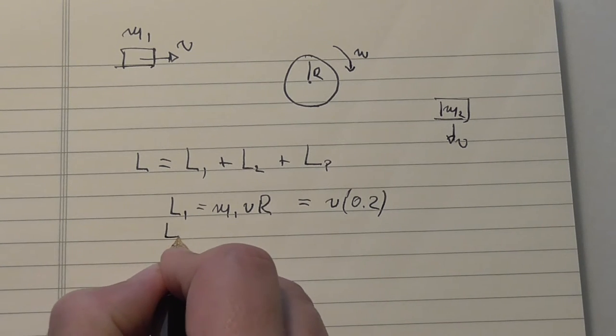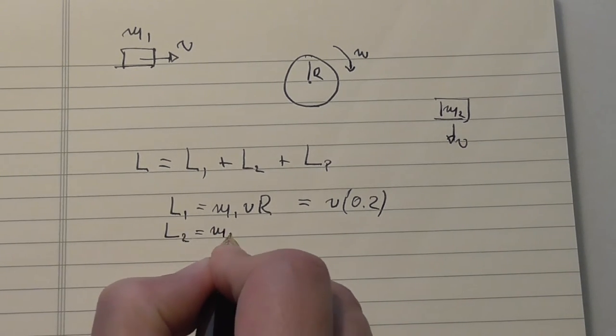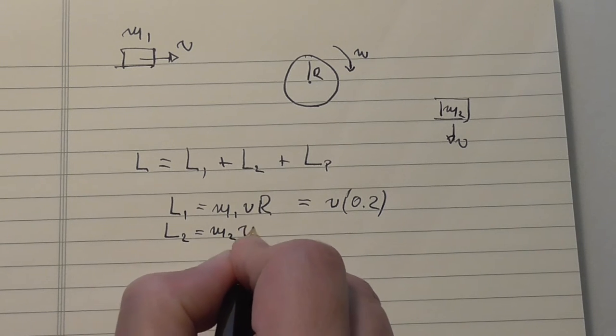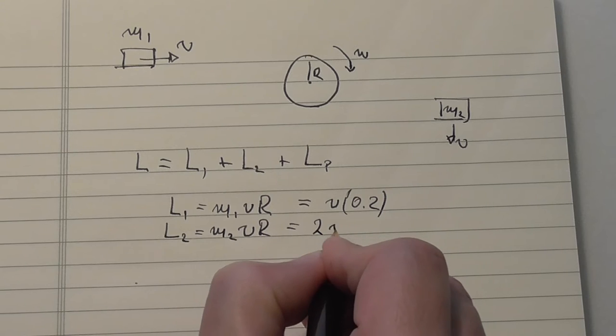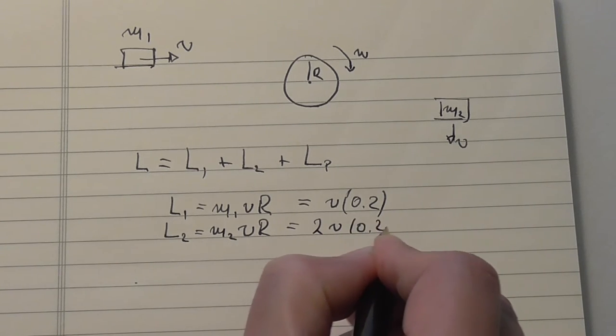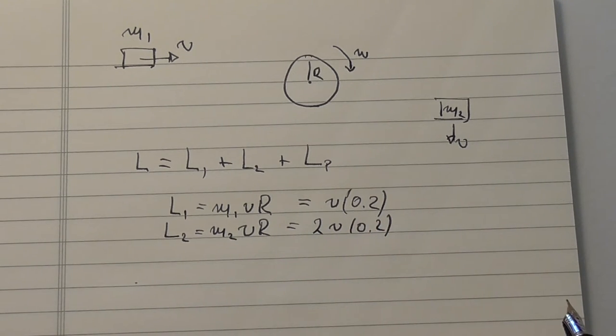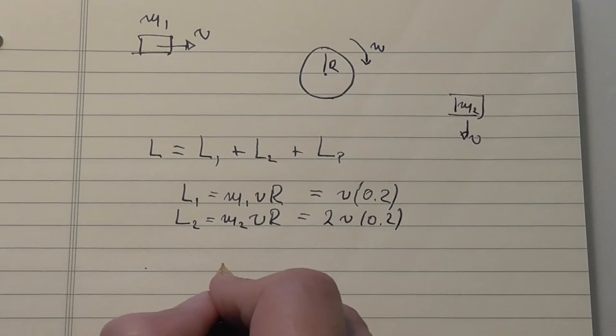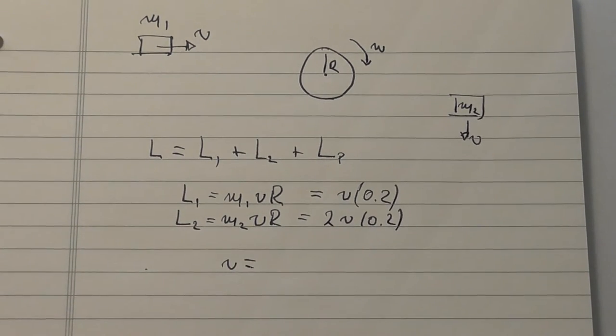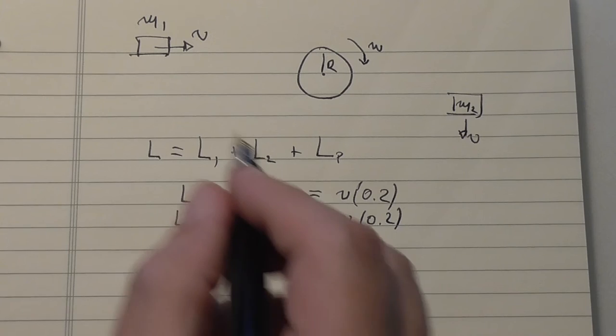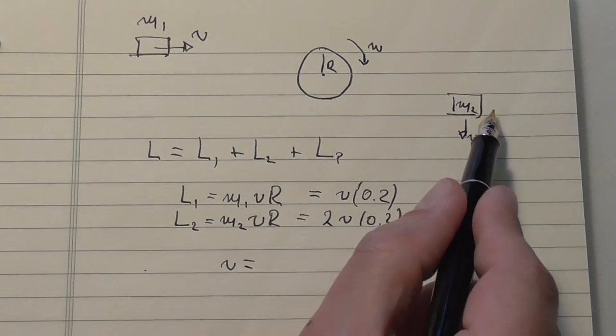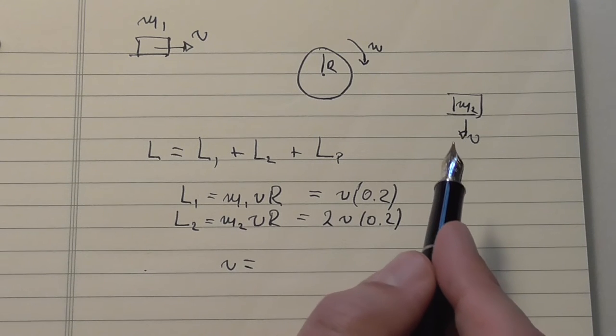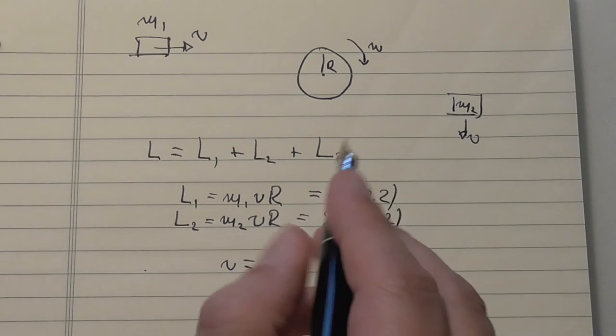Same thing for L2, m2 times v, the common velocity times r, so this is now 2, v, 0.2. Now I need to use some kinematics, that there is acceleration for this, for both masses, which we found, it's 5 meters per second squared.